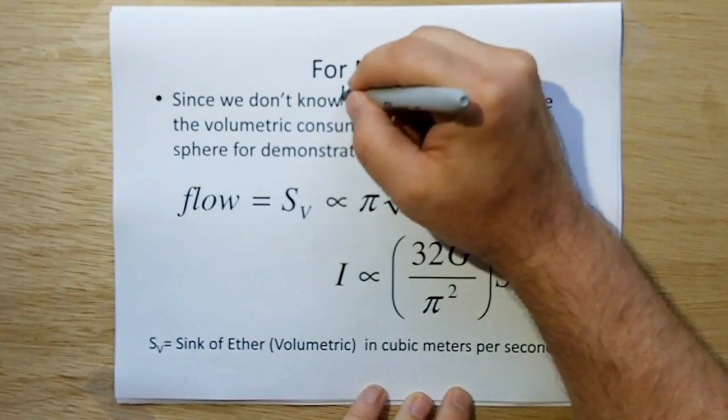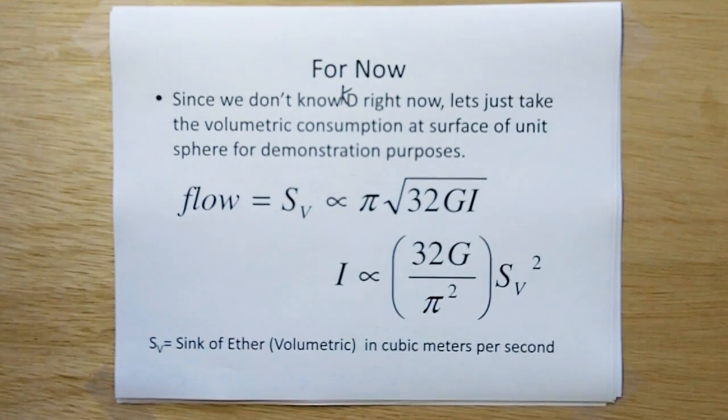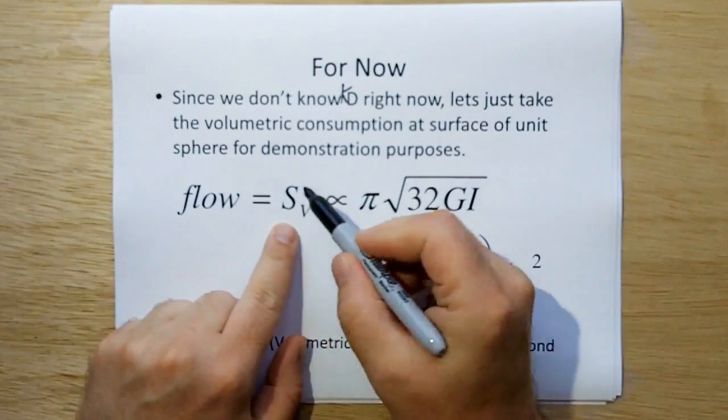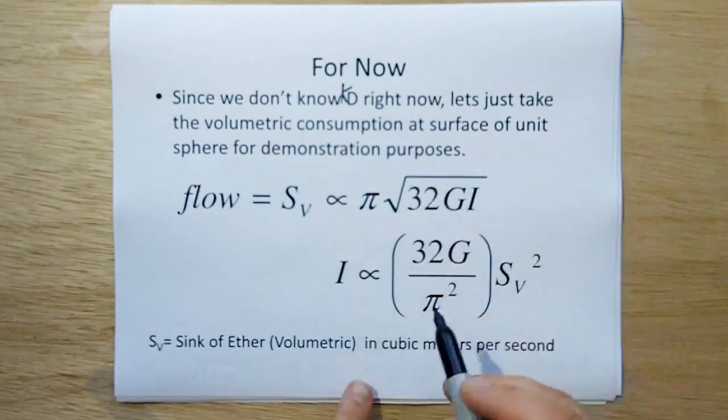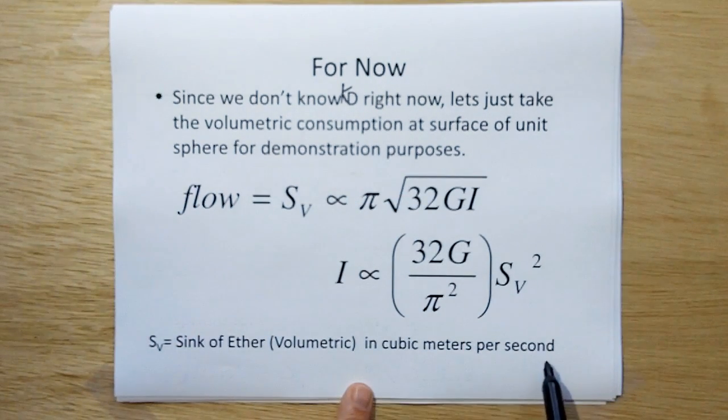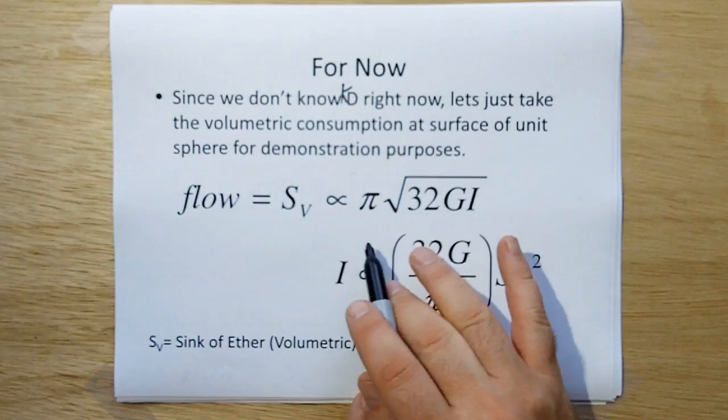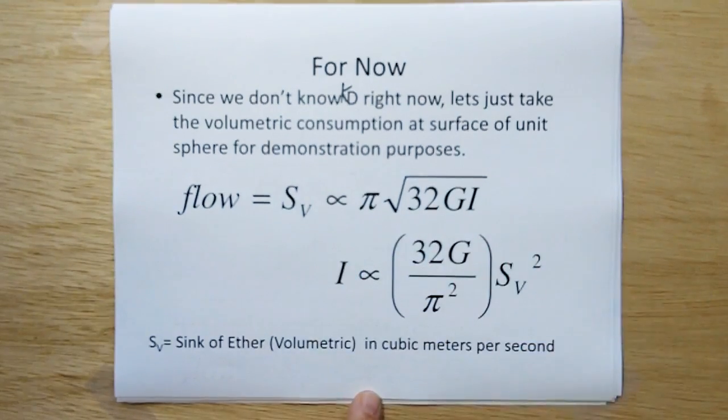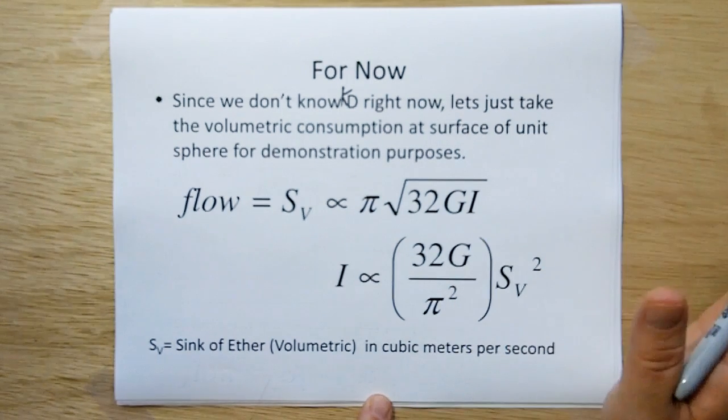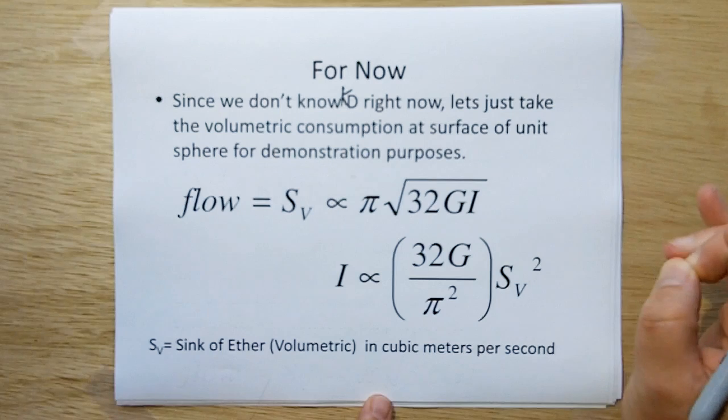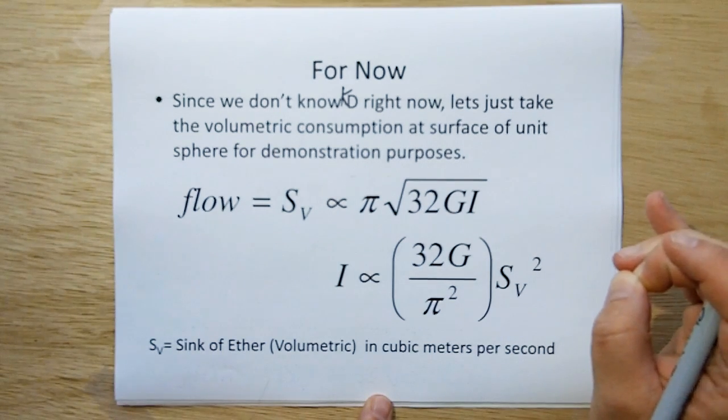For now, since we don't know KD right now, which means we don't know D right now, let's take the volumetric consumption at the surface unit, at the surface of a unit sphere. This is not S as it was before, which is the particles per second. This is volumetric, which is the sink of ether in cubic meters per second. So we're not multiplying it by the density factor anymore. And then what we're going to do is we're going to do this at a unit sphere, which comes out to this equation here. Okay, so right now we're talking in terms of volumetric consumption. Because we don't know how many ether particles there are right yet until we come up with a density coefficient. So right now we're going to talk in terms of cubic meters of ether.